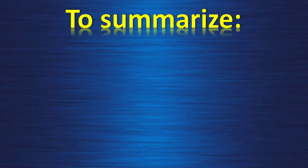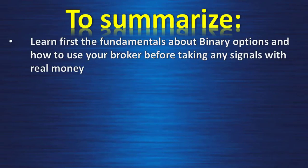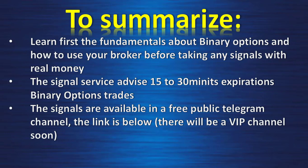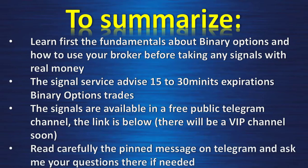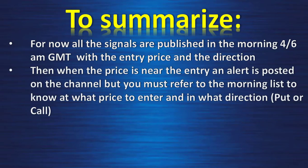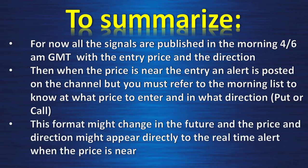To summarize this video: learn first the fundamentals about binary options and how to use your broker before taking any signal with real money. The signal service advises 15 to 30 minutes expiration binary option trades. The signals are available in a free public Telegram channel — the link is below. There will be a paid VIP channel soon. Read carefully the pinned message on Telegram and ask me your questions there if needed. For now, all signals are published in the morning, 4 to 6 AM GMT, with the entry price and direction. Then, when the price is near the entry, an alert is posted on the channel, but you must refer to the morning list to know at what price to enter and in what direction — put or call. This format might change in the future, and the price and direction might appear directly in the real-time alert.